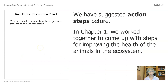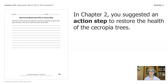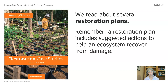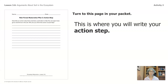You've done this before. In chapter one, we worked together to come up with steps for improving the health of the animals in the ecosystem — we decided that we would add more plants to the ecosystem. In chapter two, you suggested an action step to restore the health of the Socopia trees; you most likely suggested that the Socopia trees needed more water and that water molecules help them build their body matter. Now for chapter three's action step, we need to consider the restoration plans we've read. The restoration plans include suggested actions to help an ecosystem recover from damage. Now that you understand that the soil is the reason why the Socopia trees aren't growing and thriving in the project area, you can recommend action steps to restore the health of the soil and the trees in the ecosystem.